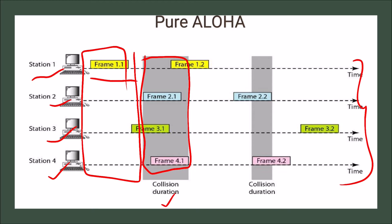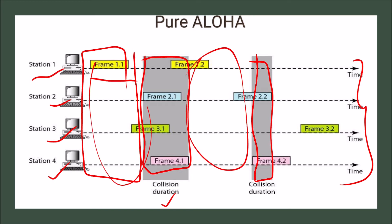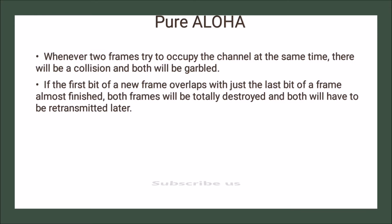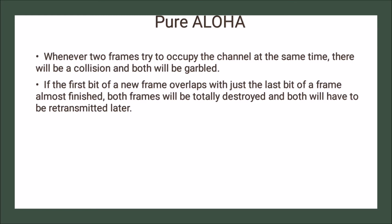Frame 4.1 is also transmitting, making that a collision duration. Again, frame 2.2 is not yet complete when frame 4.2 starts sending, so the whole frame is not sent properly and a collision occurs. The gray portions represent collision durations and the white portions are collision-free. Whenever two frames try to occupy the channel at the same time there will be a collision — both will be garbled. If the first bit of a new frame overlaps with just the last bit of a frame almost finished, both frames will be totally destroyed and will have to be retransmitted.